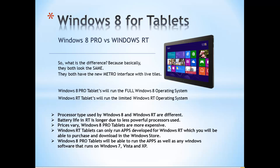To recap the four main differences: Windows 8 Pro tablets have powerful Intel processors and shorter battery life, while Windows RT tablets have ARM-based mobile processors and longer battery life. Windows RT is cheaper, Windows 8 Pro is more expensive. Windows 8 Pro tablets can run everything, while Windows RT tablets can only run apps developed specifically for Windows RT.